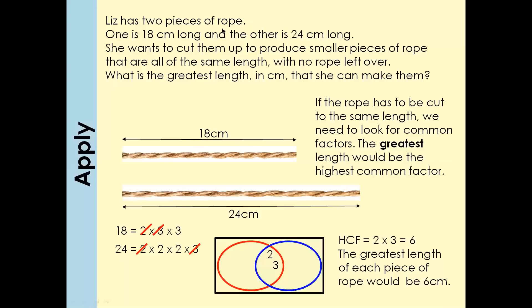For this question, they're asking you to find the greatest or the highest, meaning they want the HCF, not the LCM. We find the factors of 18 and 24, put them in a Venn diagram, and 2 × 3 = 6. You always have to relate your answer back to the question for a worded problem. So we write: the greatest length of each piece is going to be six centimetres.